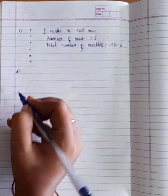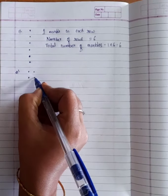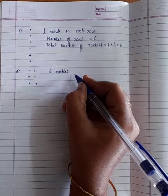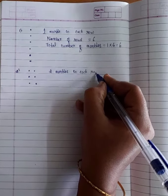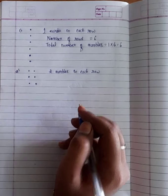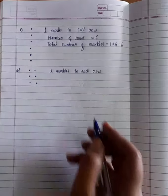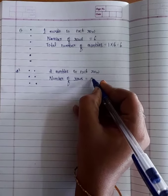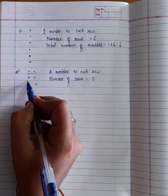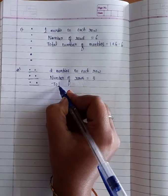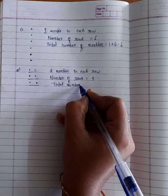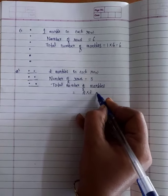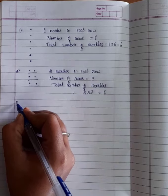He arranged the marbles in the second way. Here, 2 marbles in each row, and number of rows is 3. Number of rows equals 3; each row contains 2 marbles. Therefore, total number of marbles equals 2 into 3, that is 6.